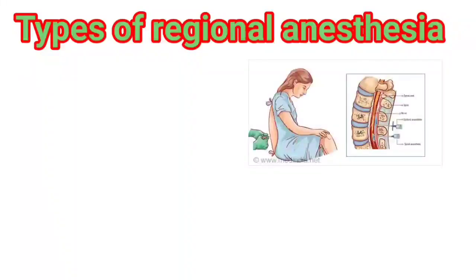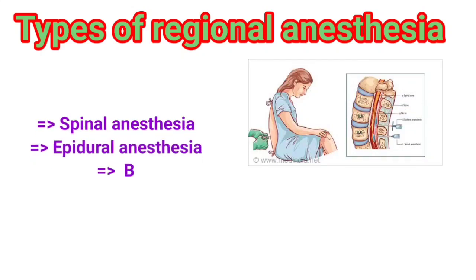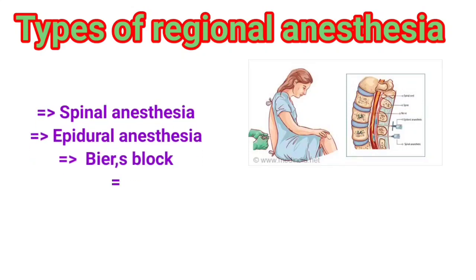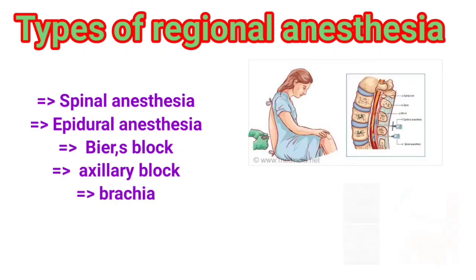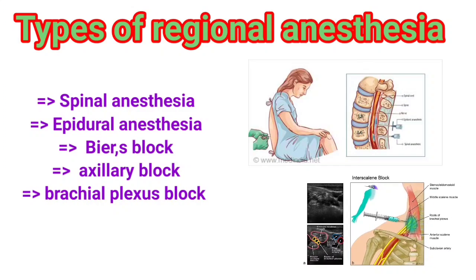There are many types of regional anesthesia. Some are mentioned below: Spinal Anesthesia, Epidural Anesthesia, Bier's Block, Axillary Block, and Brachial Plexus Block.